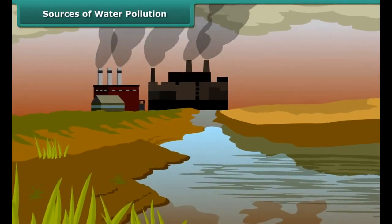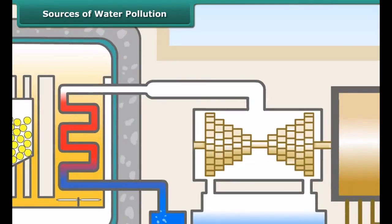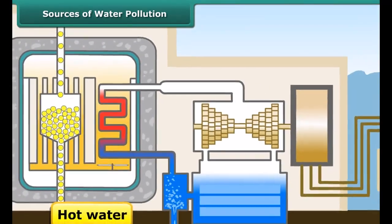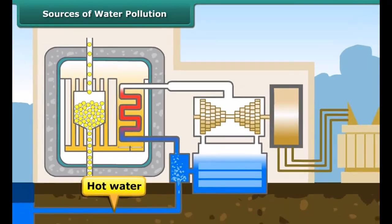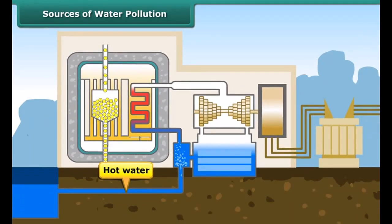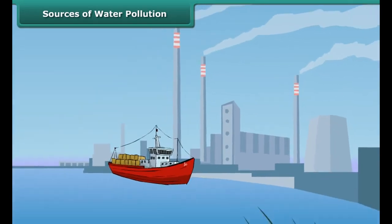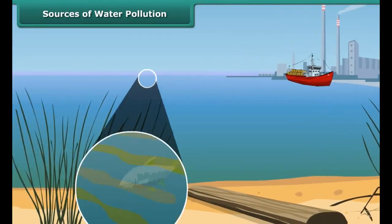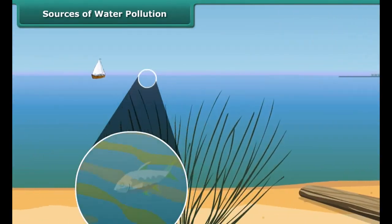Often, factories and power plants use normal water to cool their machinery and then release hot water back into water bodies. This heats up the water body, causing aquatic animals to die.